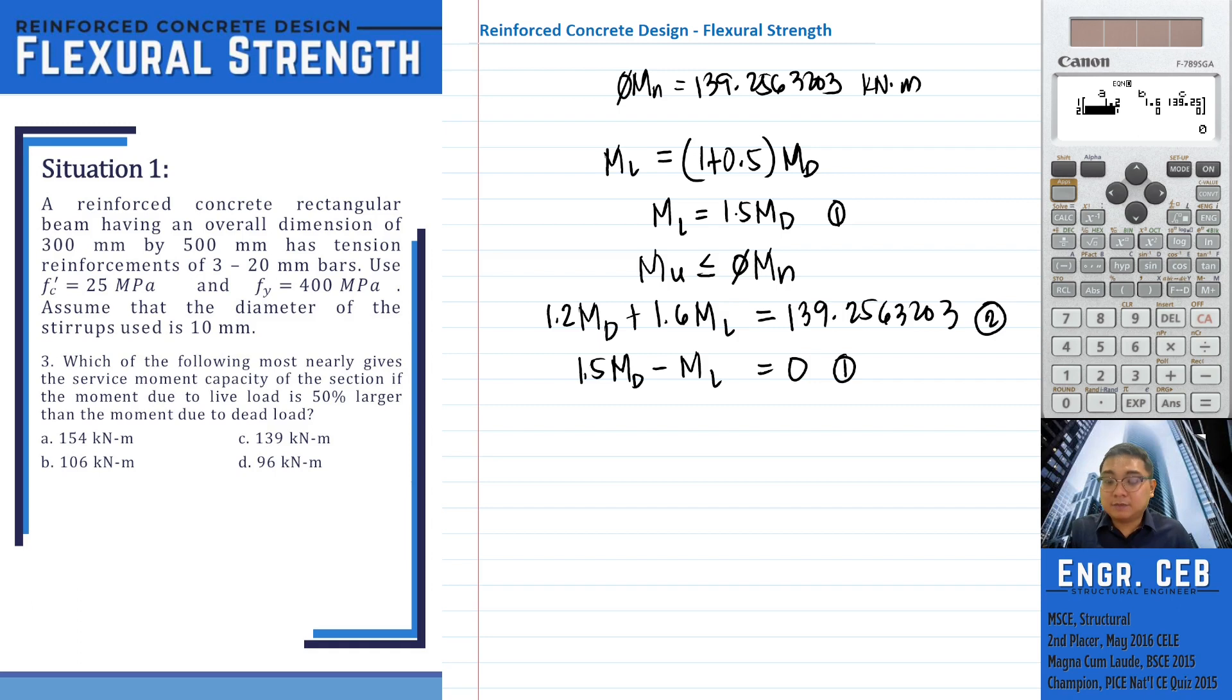For the first equation, the coefficient of M sub D is 1.5. Negative 1 is the coefficient of M sub L, and the constant value is 0. Therefore, this is now the value of M sub D. And then M sub L, we just press another equals. So we have 58.02346679 kNm.